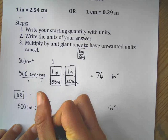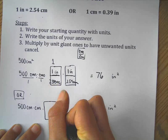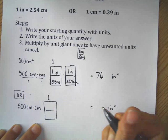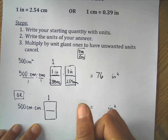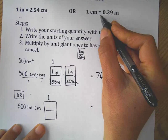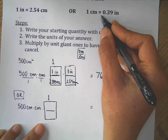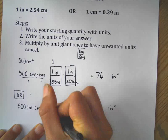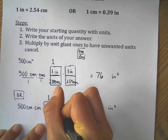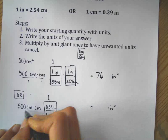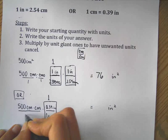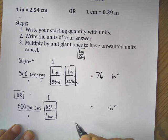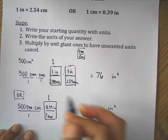And then I'm going to multiply by a giant one that has units, just like seven days over one week. That's equivalent to one. But in this case, I'm going to use this equivalency. So one centimeter is equal to 0.39 inches. So centimeters in the numerator, centimeters in the denominator cancel. I have centimeters inches. Trying to get all the way to inches squared.